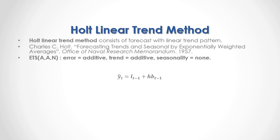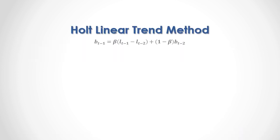As a formula, the current period forecast equals the previous period's level forecast plus H — the number of periods for which we are doing the forecast — multiplied by the previous period's trend forecast. The previous period's level forecast equals an alpha level smoothing coefficient multiplied by the previous period's data, plus 1 minus alpha multiplied by the second previous period's level forecast plus the second previous period's trend forecast. The previous period's trend forecast equals a beta trend smoothing coefficient multiplied by the previous period's level forecast minus the second previous period's level forecast, plus 1 minus beta multiplied by the second previous period's trend forecast.